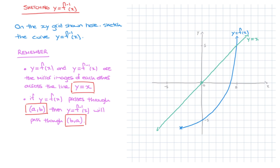Since the curve of the inverse function will be the mirror image of the blue curve across the line y equals x, we can already tell it's going to look something like what I'm hovering over right now. But thanks to the second point we wrote down, we're going to be able to sketch it as accurately as possible. To use this, let's pick up the coordinates of a few key points on the blue curve.